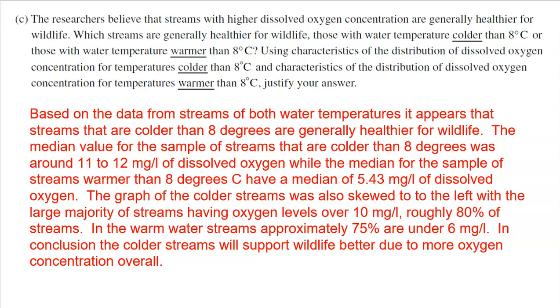All right, in part C here, the researchers believe the streams with higher dissolved oxygen concentration are generally healthier for wildlife. I'll say that one more time. Streams with higher dissolved oxygen concentration are healthier for wildlife. So which streams are generally healthier for wildlife? Those with temperatures colder than 8 degrees or those with temperatures warmer than 8 degrees? Use the characteristics of the distribution of dissolved oxygen concentration for temperatures colder than 8 degrees and warmer than 8 degrees to justify your answer. So before I even started, I went back and I thought, clearly looking at the streams colder, that was the histogram, they were on the higher side.